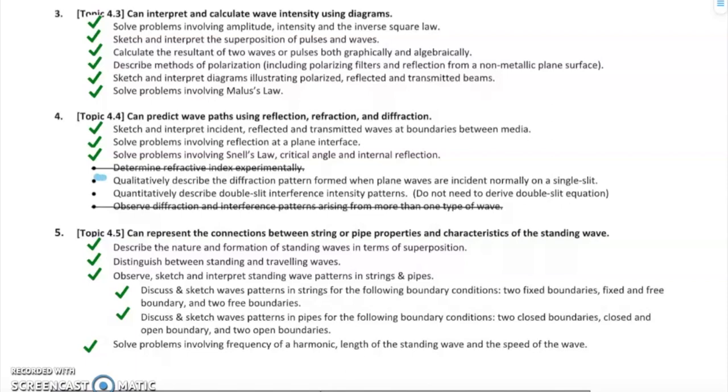Qualitatively describing diffraction patterns formed when plane waves are incident normally on a single slit, and then quantitatively describing double-slit interference intensity patterns. Today we will be deriving an equation for double-slit. You should be familiar with the derivation, but you probably will not have to reproduce it. This is going to be our last topic in the SL topics for this unit.